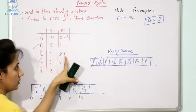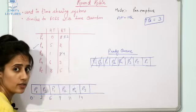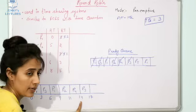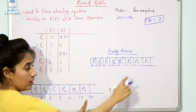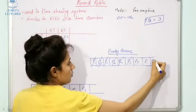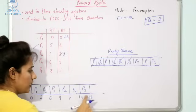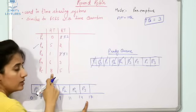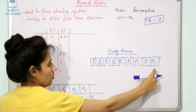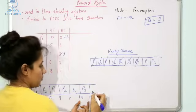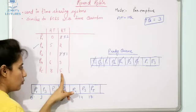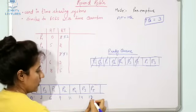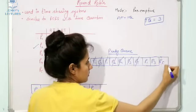Next, P3 runs. It still needs four units of time but we can only allocate three, so P3 runs from time fourteen to seventeen with one unit remaining. P3 goes back to the ready queue. All remaining processes have arrived by time eight, so no new arrivals need to be checked. Next, P5 runs for three units — from seventeen to twenty — with two units remaining, then goes back to the ready queue.